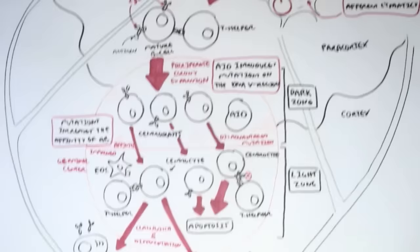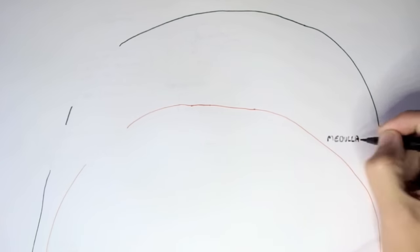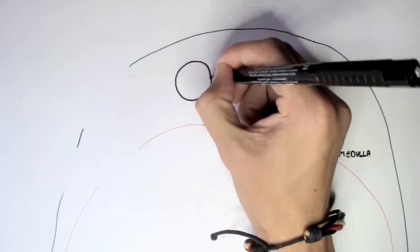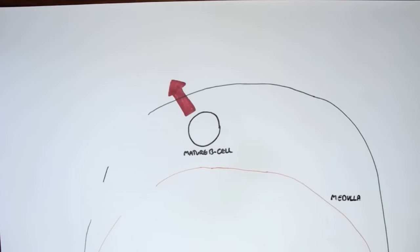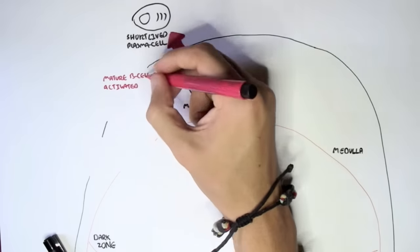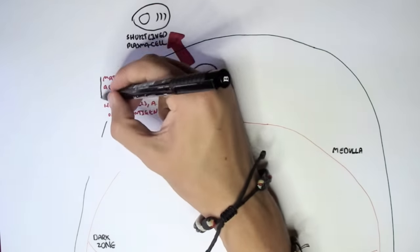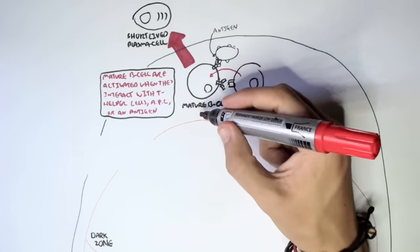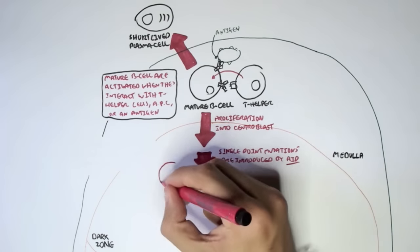Now let's look at the process of hypermutation and class switching in a bit more detail. Here is a section of the lymph node medulla, and the orange circular area is the germinal center, consisting of a dark zone and a light zone. The mature B cell in the lymph node expresses IgD and IgM antibodies. A mature B cell can take a different pathway and become a short-lived plasma cell, which typically secretes IgM — this is usually the quick primary immune response. Alternatively, a mature B cell can become activated when it interacts with a T helper cell, antigen-presenting cell, or an antigen of a pathogen, which will cause it to proliferate into centroblasts within the dark zone.